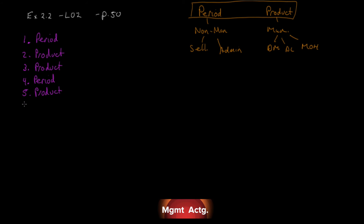Number six: factory supervisor salary — it says 'factory' right there, product cost. Number seven: heat, water, and power consumed in the factory — says 'factory,' manufacturing cost, product cost. Number eight: materials used for boxing company products for shipment overseas, with a note that units are not normally boxed. If they're not normally boxed, this boxing happens after they're built, in the finished goods warehouse — so it's a shipping cost, a period cost. You just have to answer: is this a manufacturing cost? If no, it's a period cost.